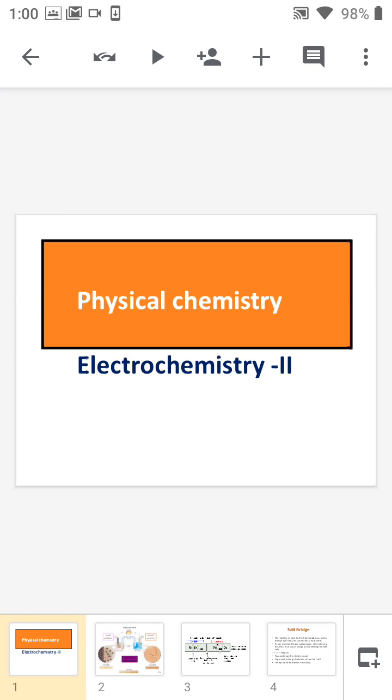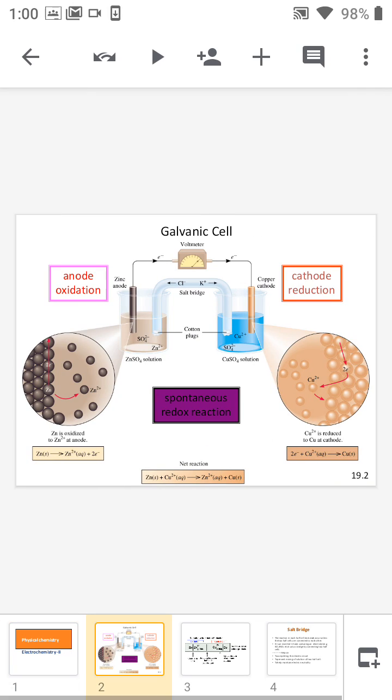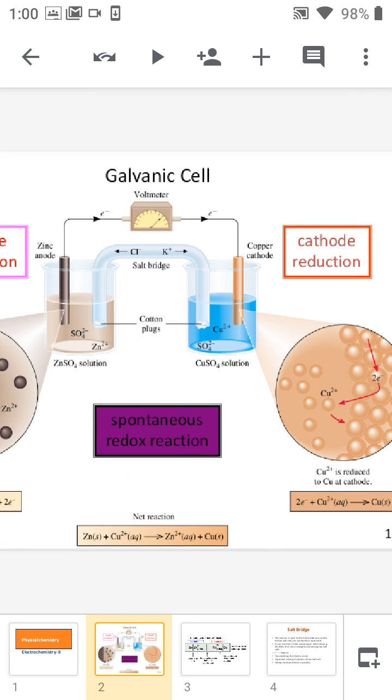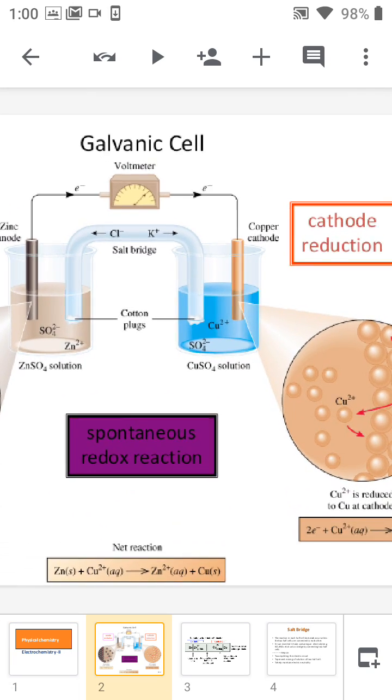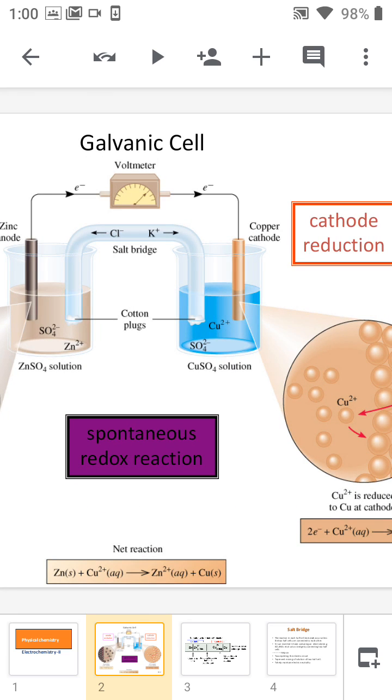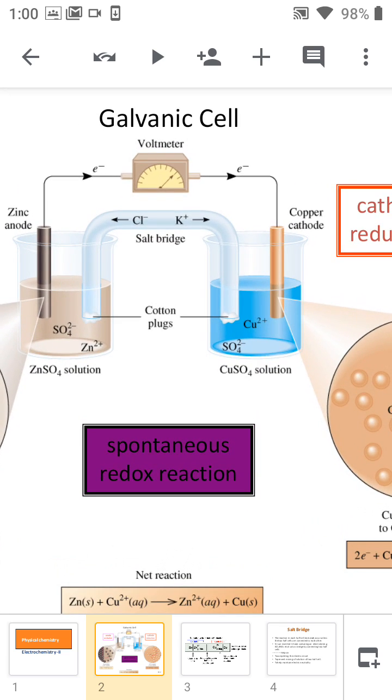Now we are moving into the representation of a galvanic cell and what chemical reactions take place in the galvanic cell. See here, in every cell we have two electrodes, and these electrodes are known as the half cells.